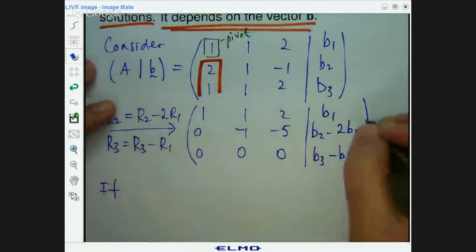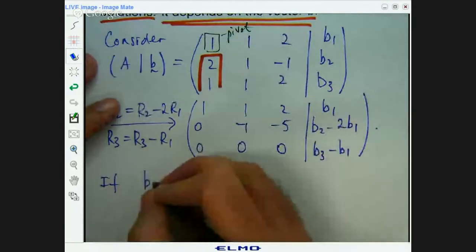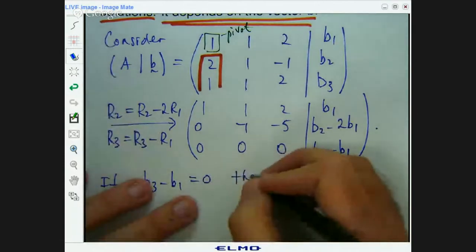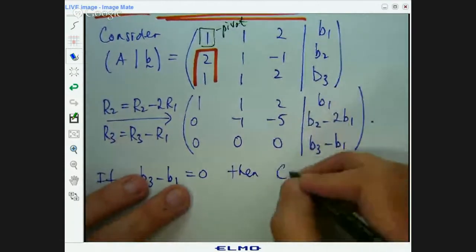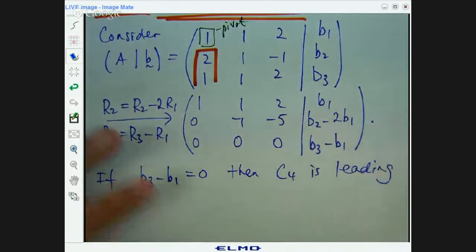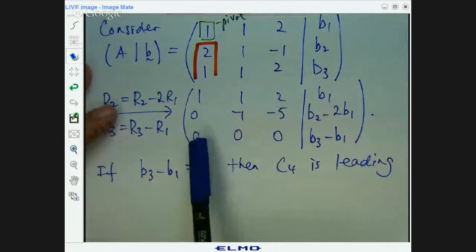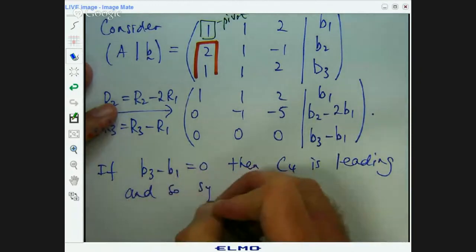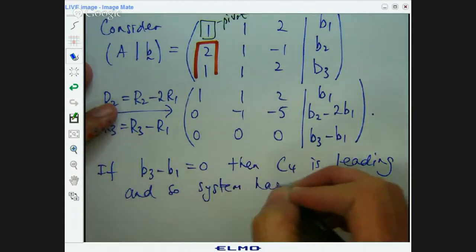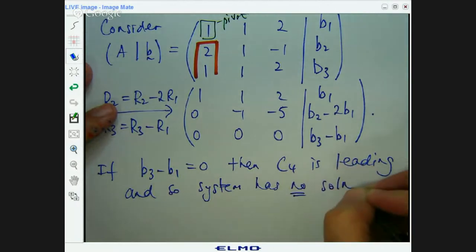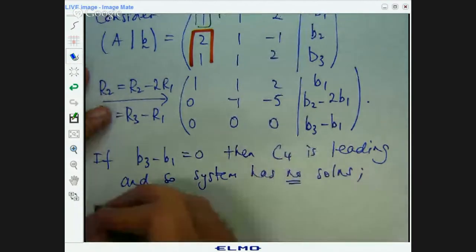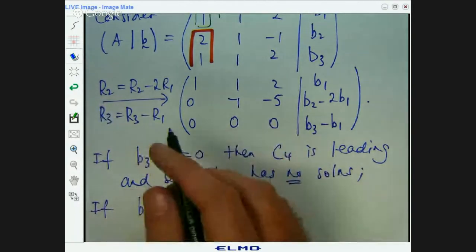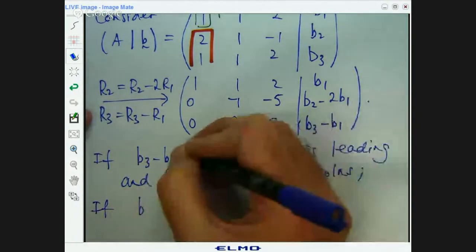Okay, so this is in row echelon form now. So if b3 minus b1 is not equal to 0, then the very right-hand column is leading. Okay, that means that basically it's saying try and tell us that 0x1 plus 0x2 plus 0x3 equals something that's non-zero. So the system has no solutions.